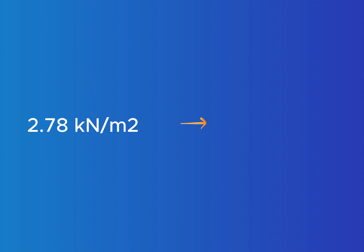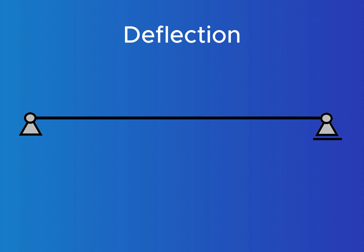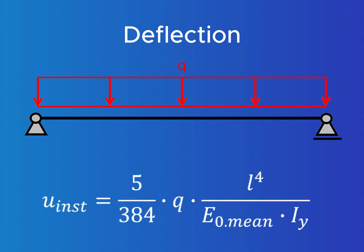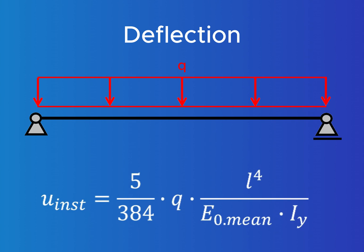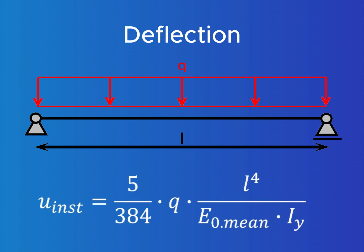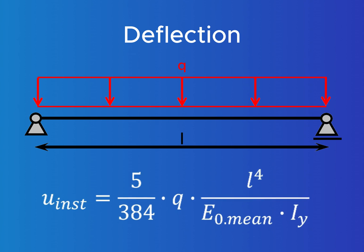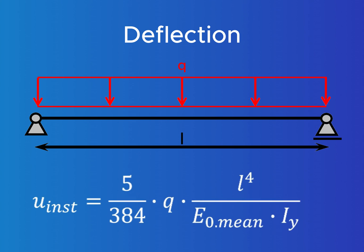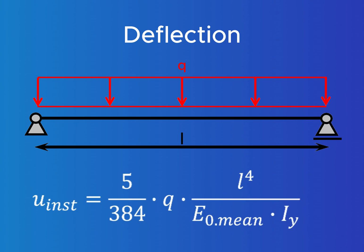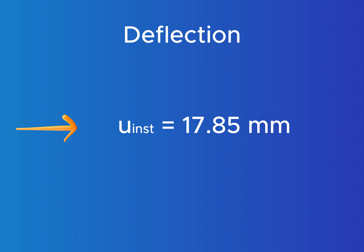Now we need to transform this area load into a line load by multiplying it with the spacing of the beams of 0.8 meters, which leads us to a line load of 2.2 kilonewton per meter. The deflection of simply supported beams exposed to line loads is calculated as 5 over 384 times the load times L to the power of 4 divided by E modulus times moment of inertia. This leads us to an instantaneous deflection of 17.85 millimeters.